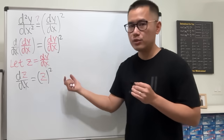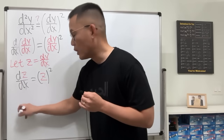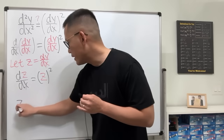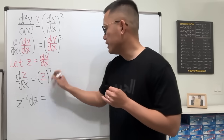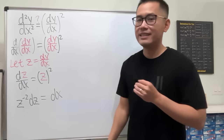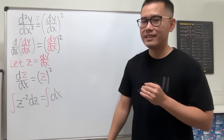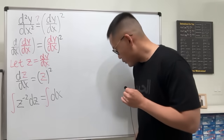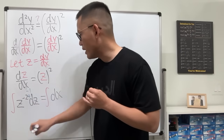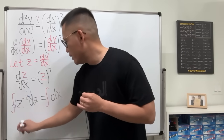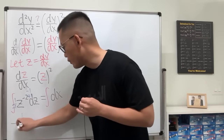We can divide both sides by z² and multiply both sides by dx. The left hand side becomes z⁻² dz, and the right hand side becomes dx. Integrating both sides using the reverse power rule, we get negative 1 over z on the left.